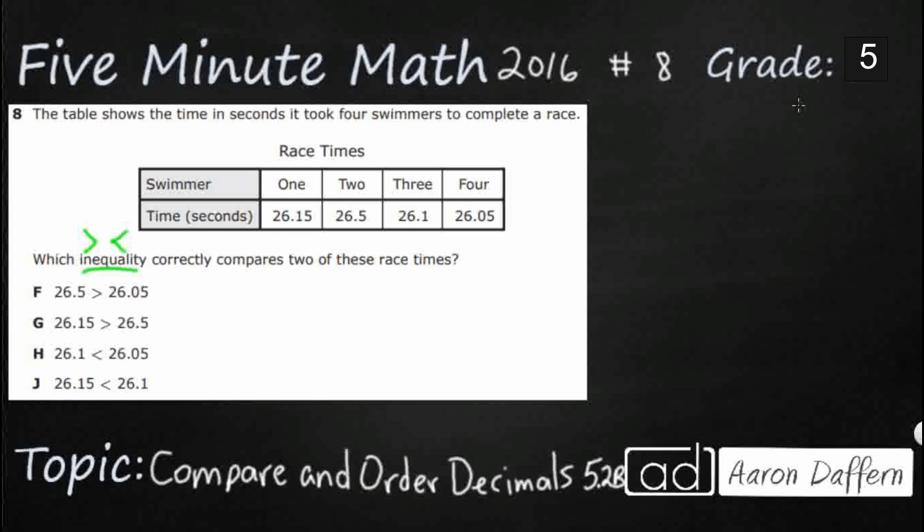Here's the trick with these race times: you have two of these race times that go to the hundredths place. So 26.15 or 26 and 15 hundredths, then 26.05 or 26 and 5 hundredths. But then you've got two race times, 26.5 or 26 and 5 tenths, and 26.1 or 26 and 1 tenth that only go to the tenths. That sometimes can get confusing. So here is the simplest thing that we can do: make any numbers that go to the tenths make them go to the hundredths.